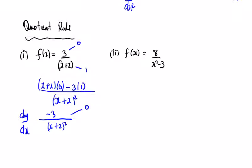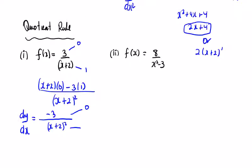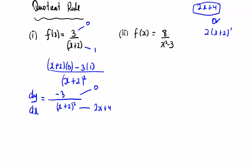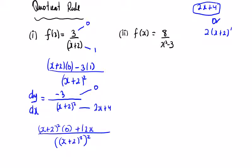Now I'm going to differentiate both again. The top differentiated is 0. A little bit of rough work: x squared plus 4x plus 4 is going to become 2x plus 4, or using the chain rule, 2 by x plus 2 to the power of 1. So we're going to have on the bottom: x plus 2 to the power of 4, and then the bottom by the top differentiated minus the top, which is minus minus 3, so I'll write plus 3, by the bottom differentiated which is 2x plus 4.